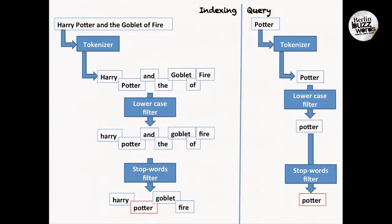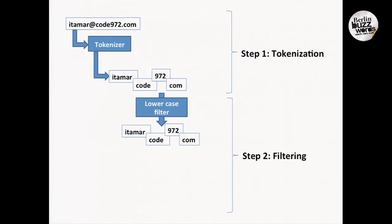Usually the analysis chain is going to match from both sides - indexing and searching. You're going to index a line of text, you'll have multiple terms in the index, and when you query you're going to query on single terms, going through the same process - that basically ensures you get the results and documents that were indexed. Sometimes, however, you will want to use different analyzers for the search part and the indexing part - there are good samples for that as well.